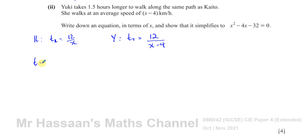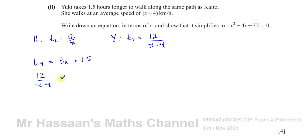Yuki's time equals Cato's time plus 1.5. So we can write: 12/(x − 4) = 12/x + 1.5. Rearranging, we get 12/(x − 4) − 12/x = 1.5, which we can also write as 3/2 keeping it as a fraction.